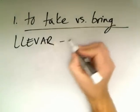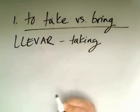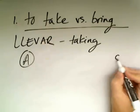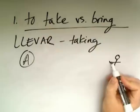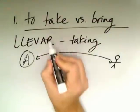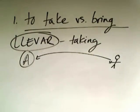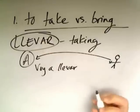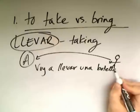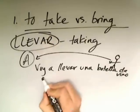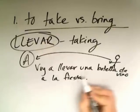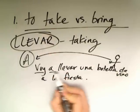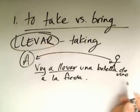We're talking about someone taking something to a location where that person is not present. So if we have point A over here and we have a person here, if this person is taking something to a place where they're not currently present, we are in llevar land. For example: Voy a llevar una botella de vino a la fiesta. I'm not at the party currently, but when I do go, I'm going to take — voy a llevar — using that future, voy a llevar una botella de vino a la fiesta.